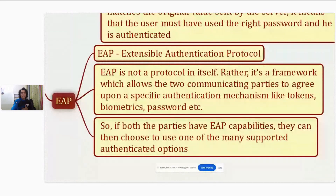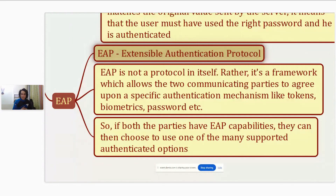The third authentication option available under PPP is called EAP - it stands for Extensible Authentication Protocol. It's a protocol used by various other frameworks as well, like wireless, but it is not limited to wireless. As the name says, it is extensible, which means it is not exactly a single protocol like PAP or CHAP - rather it's a framework. When the two parties are trying to communicate, they first check whether they are EAP compatible or configured to use EAP.